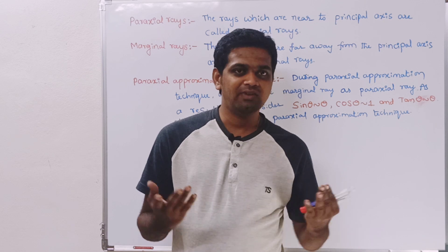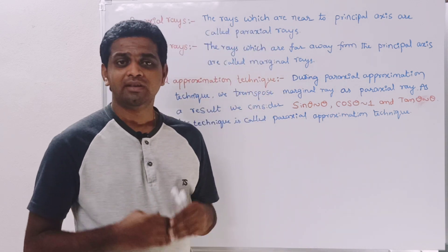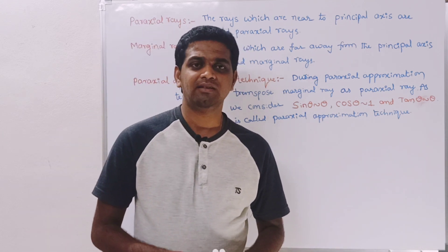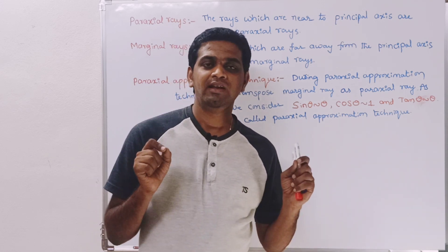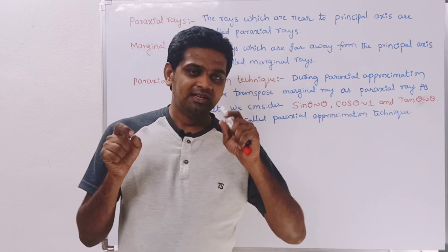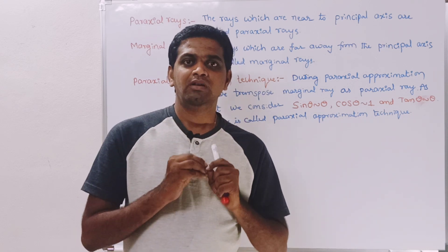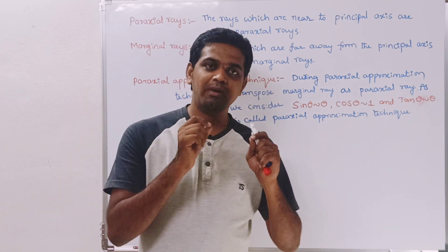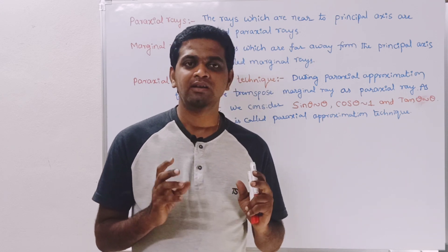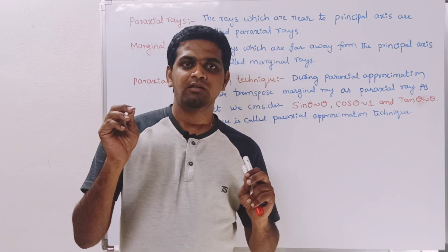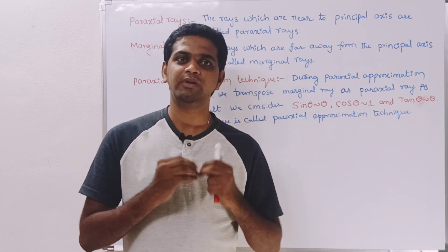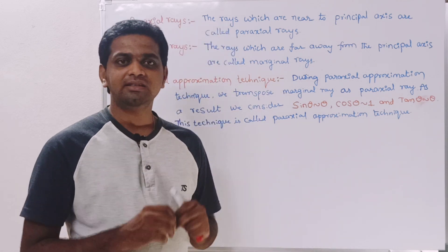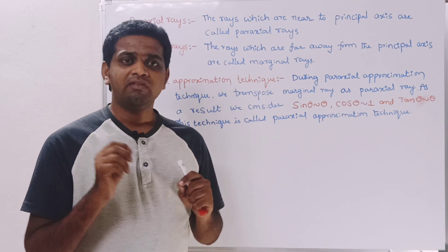The ray which is traveling far away from the principal axis is called a marginal ray. Think of it this way: if the center of a page is the pole, the margin is drawn at the extreme position of the page. Similarly, a marginal ray is far away from the pole or from the principal axis. The pole lies on the principal axis.